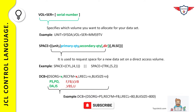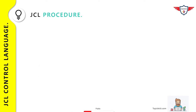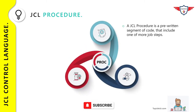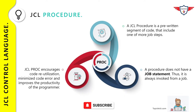So far we have discussed mainframe, JCL, different job control statements (job statement, execute statement, DD statement), and positional and keyword parameters. Now let's discuss JCL procedures (PROC). A JCL procedure or PROC is a pre-written segment of code that includes one or more job steps. A JCL PROC can be invoked from a JCL but cannot be executed on its own. Using procedures reduces the amount of JCL code, resulting in fewer coding errors and improved programmer productivity.